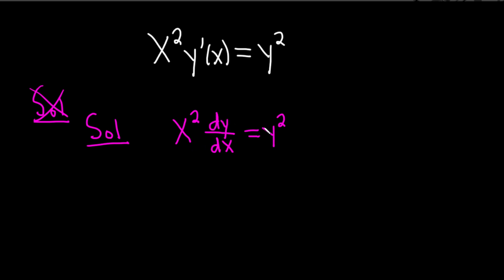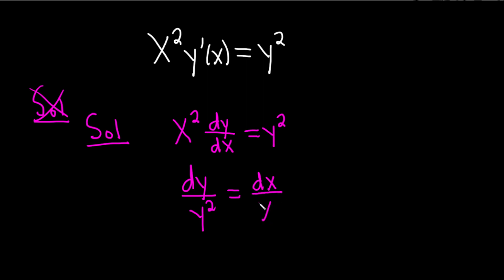The dy is already here, so let's put the y squared here — we'll divide by y squared, giving us dy over y squared. Then multiplying by dx and dividing by x squared, that's going to give us dx over x squared. So dividing by y squared ends up with dy over y squared, and multiplying by dx and dividing by x squared puts you here.